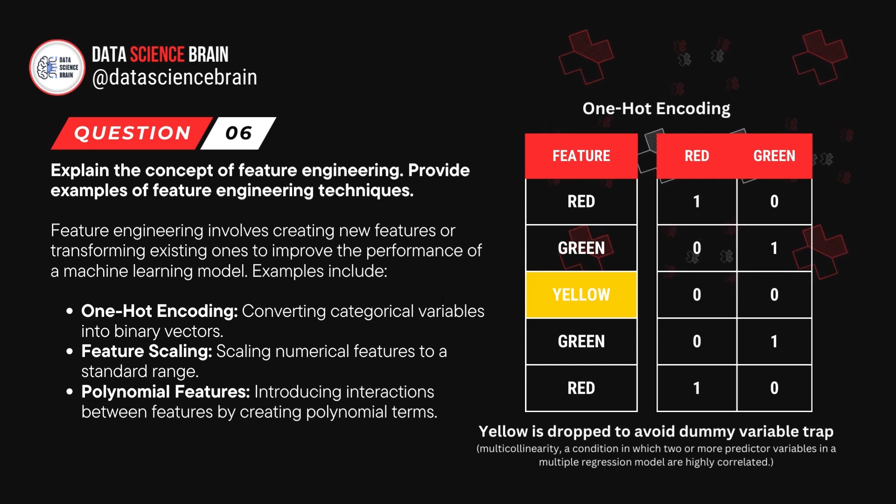Examples include one-hot encoding, converting categorical variables into binary vectors. Feature scaling, scaling numerical features to a standard range. And polynomial features, introducing interactions between features by creating polynomial terms.